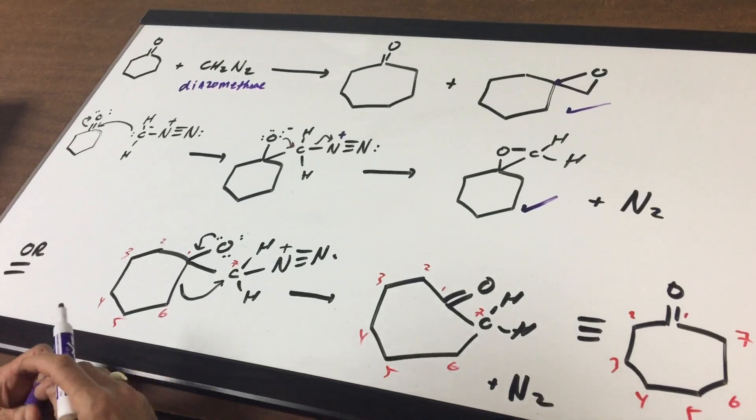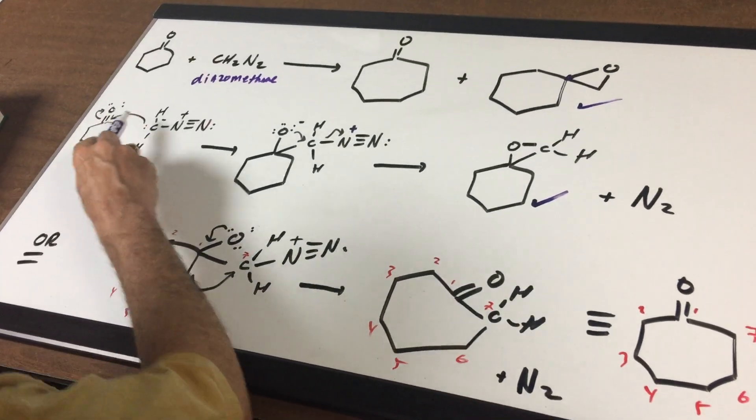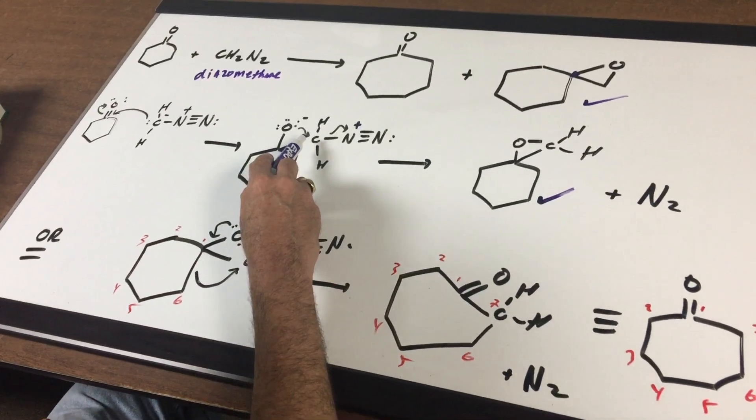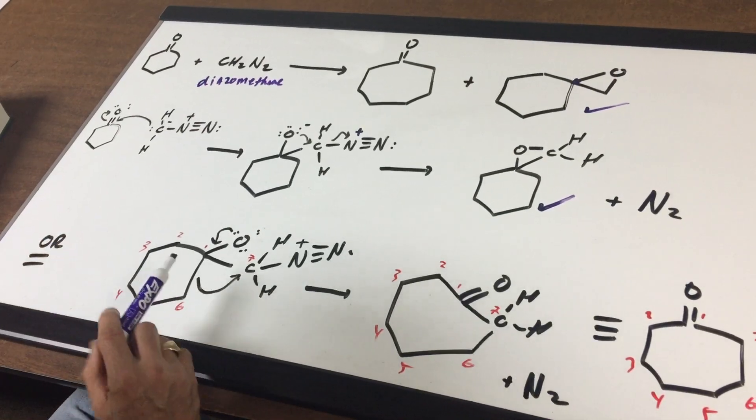How would the ring expand? Well, we do the same reaction, we do the attack, and we get the same intermediate. So I'm going to take this intermediate and just put it down here so you can see it better.